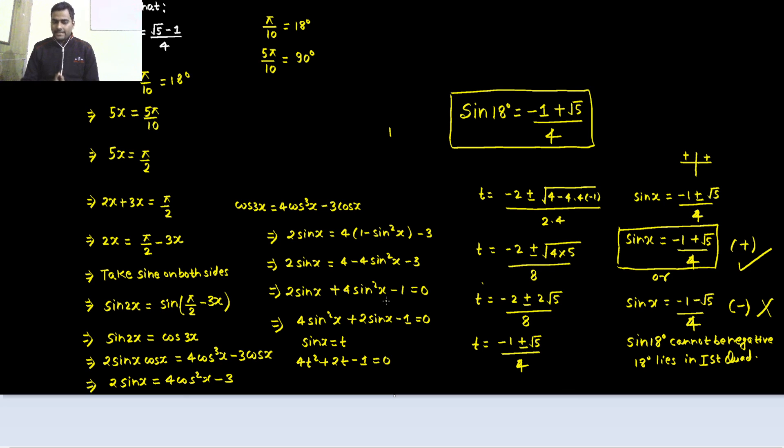So, we sent 3x to the other side. Took sine on both sides. Cos 3x value 4 cos cube x minus 3 cos x. Then 2 sin x. We cancelled one cos from both sides. And now we further kept on simplifying. We compared it to a quadratic equation. Took sine x as t. And later on we replaced t by sine x. Use the quadratic formula which you are already comfortable with I hope so. So, that's what we got in the end. Sine x values minus 1 plus root 5 by 4.